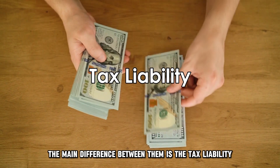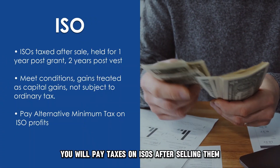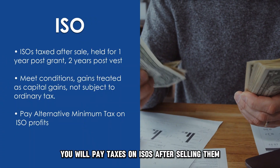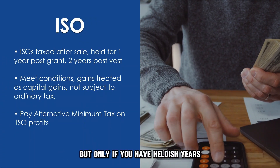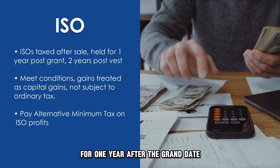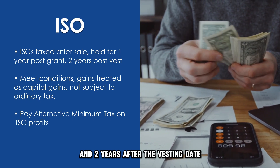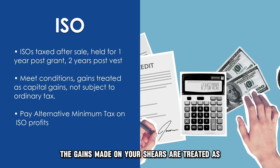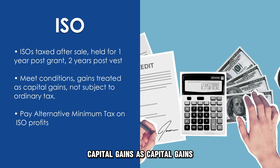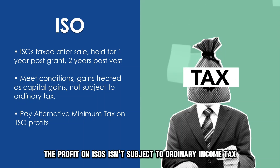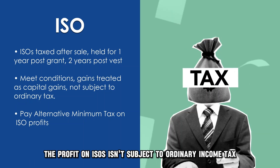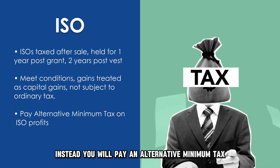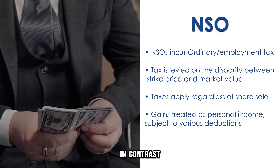The main difference between them is the tax liability. You will pay taxes on ISOs after selling them, but only if you have held the shares for one year after the grant date and two years after the vesting date. When you meet these conditions, the gains made on your shares are treated as capital gains. As capital gains, the profit on ISOs isn't subject to ordinary income tax.